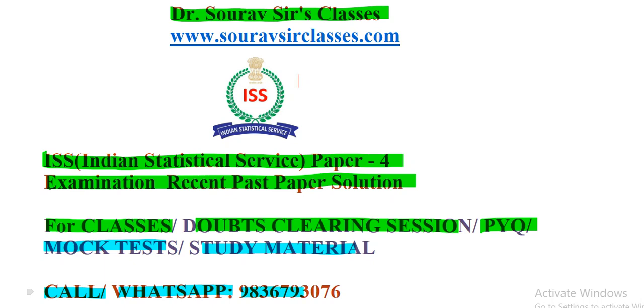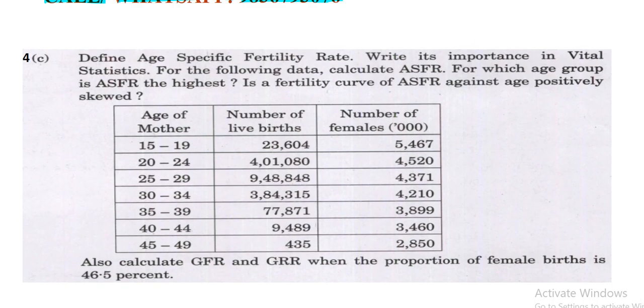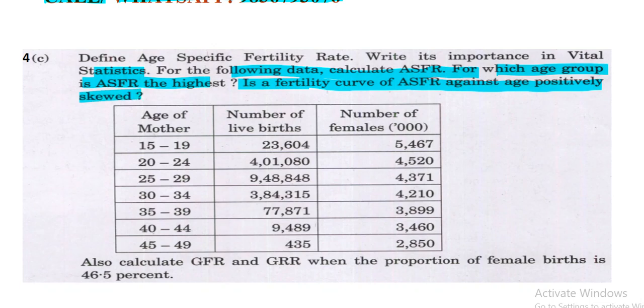Dr. Sourav Sir himself will reply to your query individually through WhatsApp. So let's start with question number 4C. The question asks: define the age-specific fertility rate, write its importance in vital statistics, and for the following data calculate ASFR for which age group ASFR is highest in a fertility curve. ASFR against age is positively skewed. Also calculate the GFR and GRR when the proportion of female births is 46.5%.